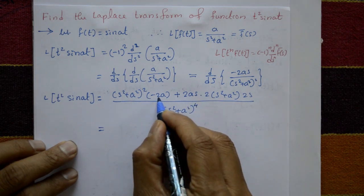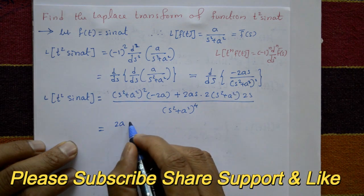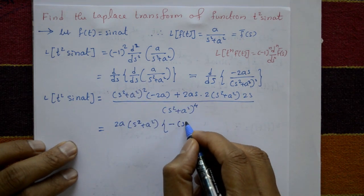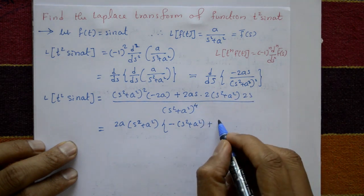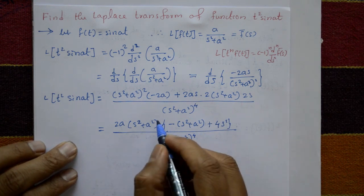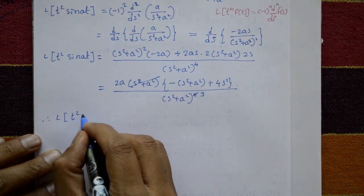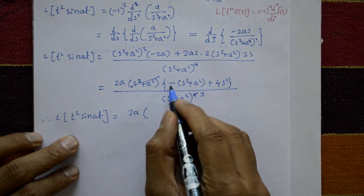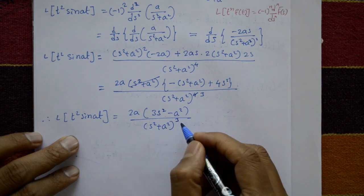Take 2a common outside. Factor out s² plus a² from the bracket. Inside, we get minus s² plus a² plus 4s², which simplifies to 3s² minus a². One bracket cancels with the denominator. Therefore, the Laplace of t² sin(at) equals 2a times (3s² minus a²) divided by s² plus a² whole cubed. This is the required solution.